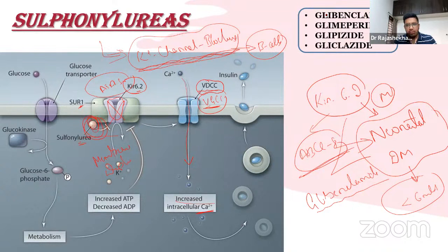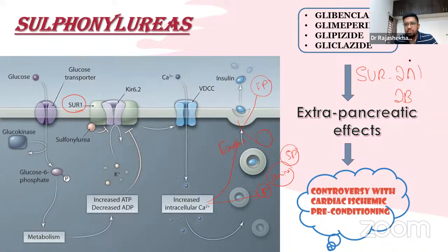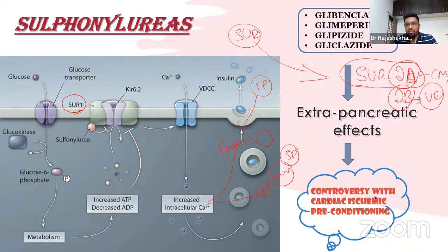Currently used sulfonylureas are glibenclamide, glimepiride, gliclazide, and glipizide. A controversy existed around extra-pancreatic effects — specifically, there are also SUR2A receptors in cardiac muscle and SUR2B in vascular endothelium. It was theorized that sulfonylureas acting on SUR2A could attenuate ischemic preconditioning of the myocardium, potentially increasing infarct size.